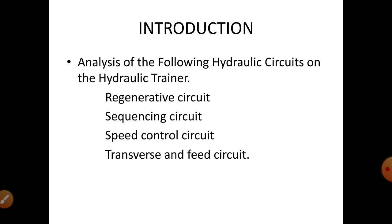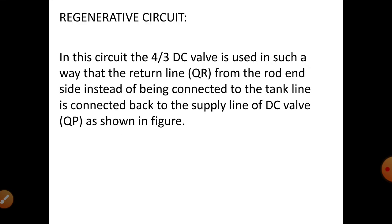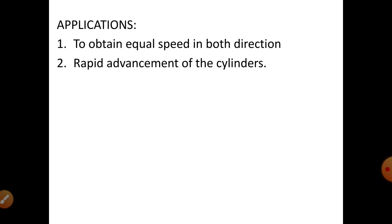First one is the regenerative circuit. In a hydraulic system we can have different types of circuits. In a regenerative circuit, a 4-port by 3-position directional control valve is used in such a way that the return line from the rod-end side, instead of being connected to the tank line, is connected back to the supply line of the DCV. The application of the regenerative circuit is to obtain equal speed in both directions and rapid advance of the cylinder.